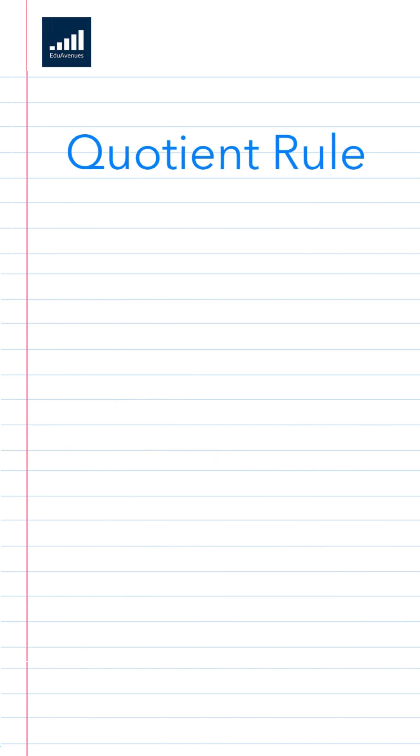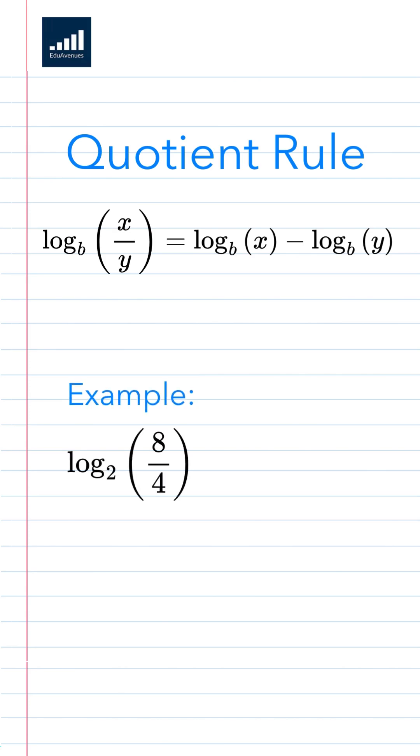Number two, the quotient rule. If you're dividing, then subtract. Again, this only applies when you have the same base. Here's an example. Log base 2 of 8 divided by 4 becomes log base 2 of 8 minus log base 2 of 4. And this becomes 3 minus 2, which ends up being 1.